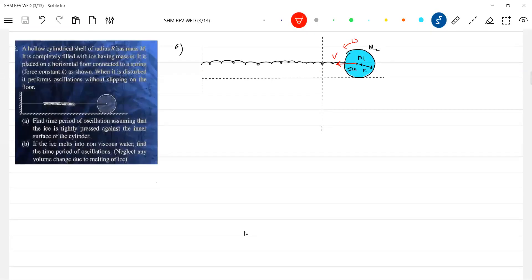Mass of ice let it be m1, mass of the cylindrical shell let it be m2, spring constant let it be k. Let's take help of energy equation: E equals mv squared by 2.